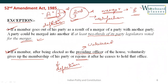There are two exceptions. The first is merger: if two-thirds of members of a political party decide to merge with another party, they will not be considered defectors. The members who are merging, as well as the one-third members who don't merge but form a separate group, will not be disqualified. The second exception is the presiding officer, who voluntarily gives up party membership and rejoins after ceasing to be a presiding officer.